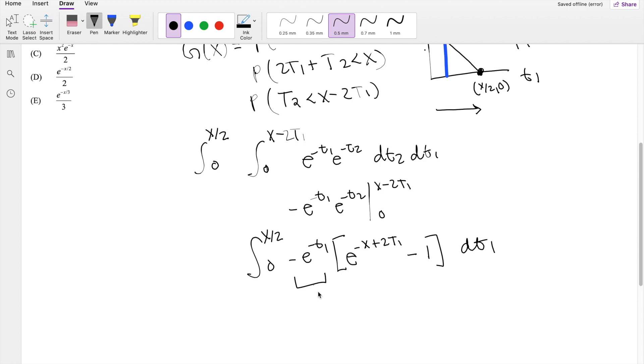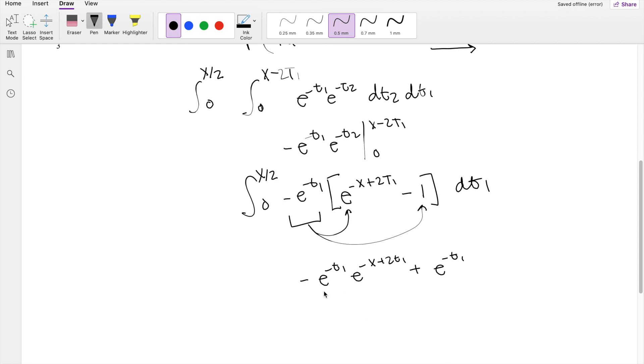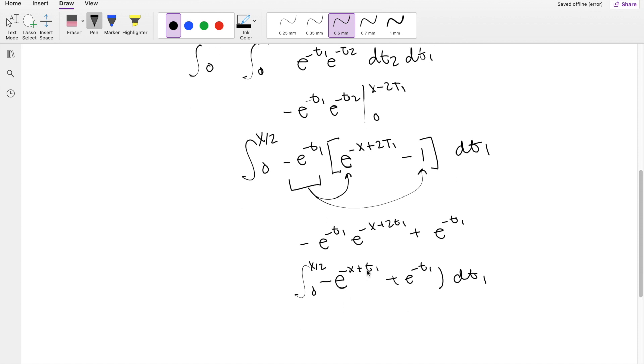And I'm keeping the other shell here for dt1 going from 0 to x over 2. So then distributing this term, you get negative e to the negative t1 times e to the negative x plus 2t1, minus minus becomes positive e to the negative t1. So then this term, because they have the same base, we can actually add it together. So it becomes negative e to the negative x plus t1 plus e to the negative t1 dt1. And then we're integrating this from 0 to x over 2. Taking the anti-derivative, you get plus t1 minus e to the negative t1, integrating from 0 to x over 2.